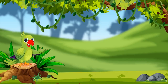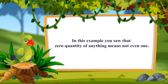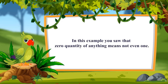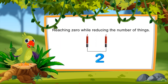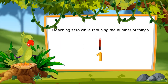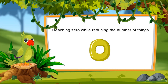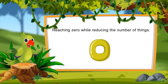Children, in this example you saw that zero quantity of anything means not even one. Can you also one by one reduce the number of things to reach the number zero? Look at the number of things around you and reduce their number one by one until you reach the number zero.